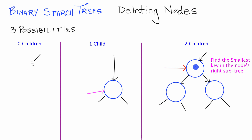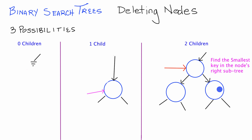Whatever key was in the original node has a value greater than everything in its left subtree, but smaller than every key in its right subtree. That means every key in the right subtree is greater than every key in the left subtree. So we can take any key from the right subtree and it will still be greater than any key in the left subtree. To also satisfy the right subtree's properties, we need the smallest value from the right subtree — placing it here means it's greater than every value in the left subtree but smaller than every remaining value in the right subtree, so the BST properties are satisfied.